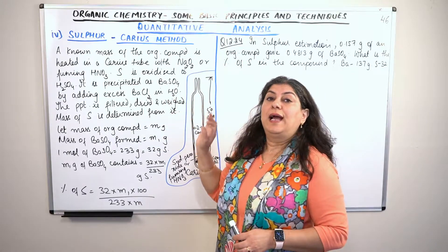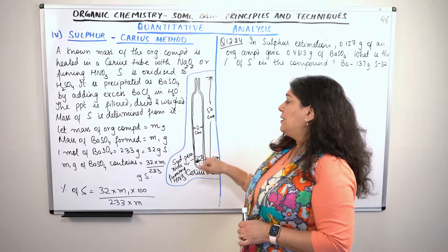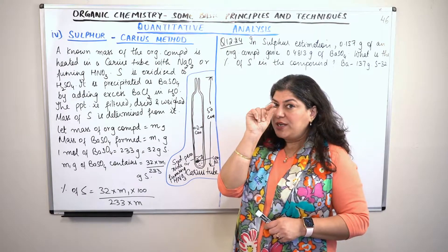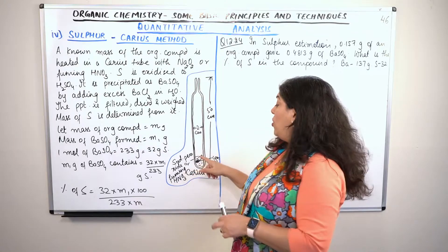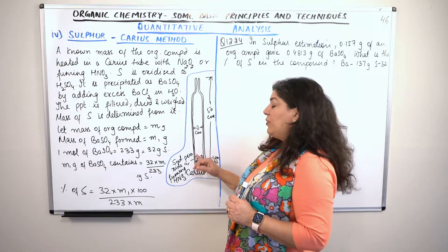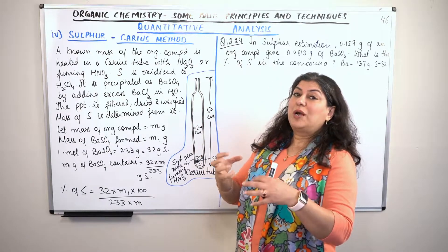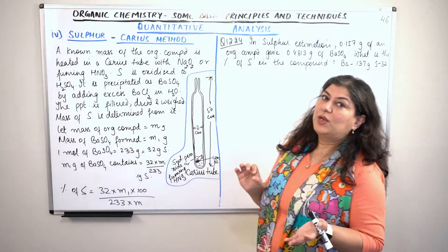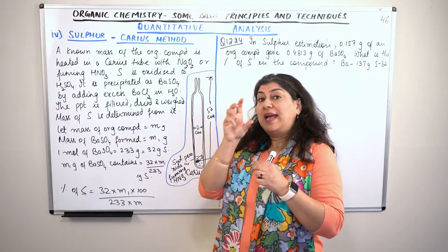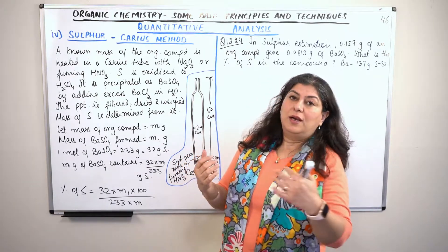In the previous video, I told you that we use a Carius tube for halogens. In the Carius method, we use a Carius tube that is 50 cm long and 2 cm wide — it is an ignition tube. We add the compound and react it with a strong oxidizing agent. We then create a precipitate; in the case of halogens, we made silver halides. Then we calculated the mass of halogens and removed the mass percentage.